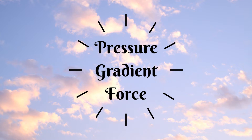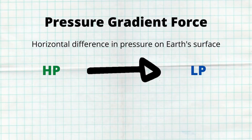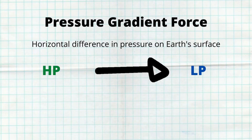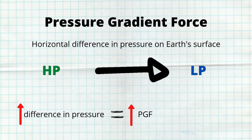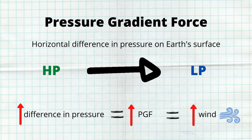Winds move away from high pressure areas towards low pressure areas, and that is caused by something called pressure gradient force. Pressure gradient force is the horizontal difference in pressure on the earth's surface. The greater the difference in pressure, the stronger the pressure gradient force and the stronger the wind will be.